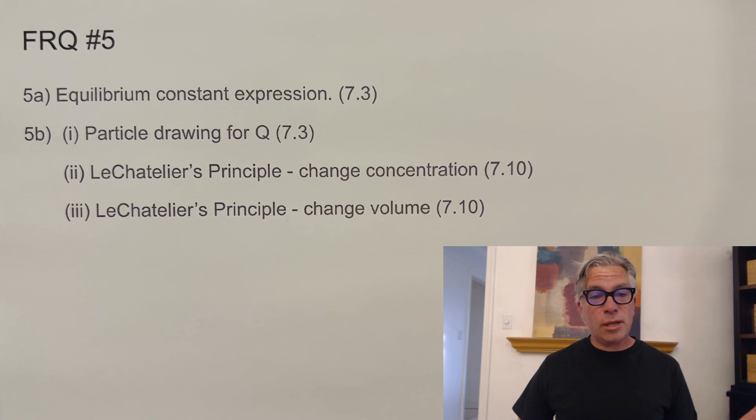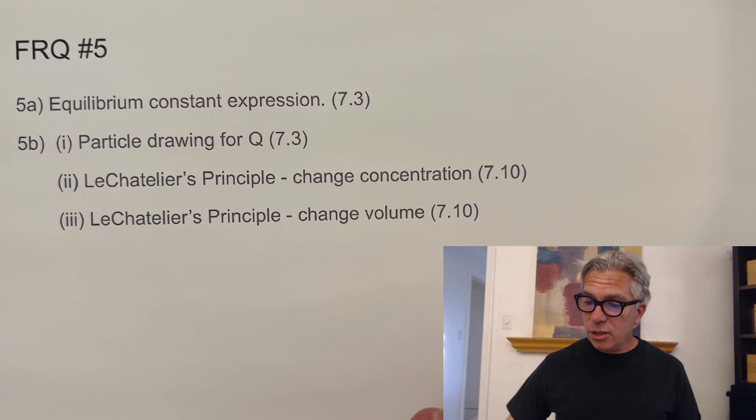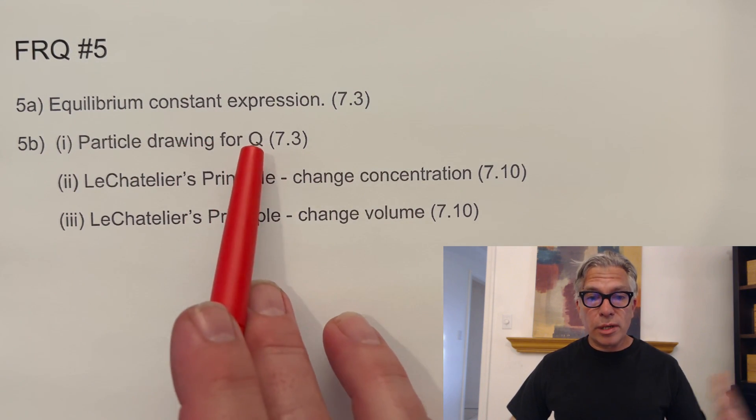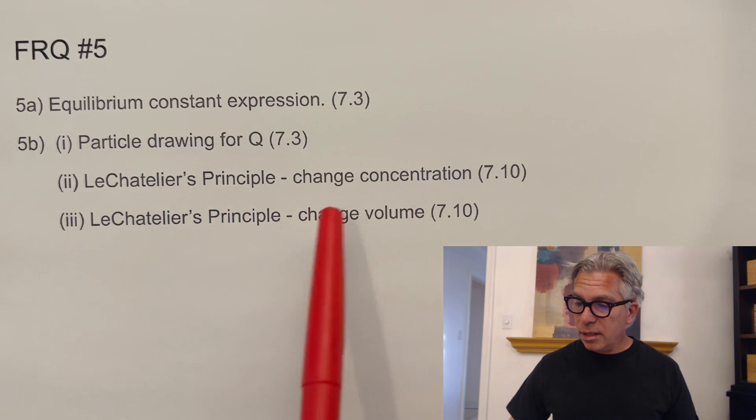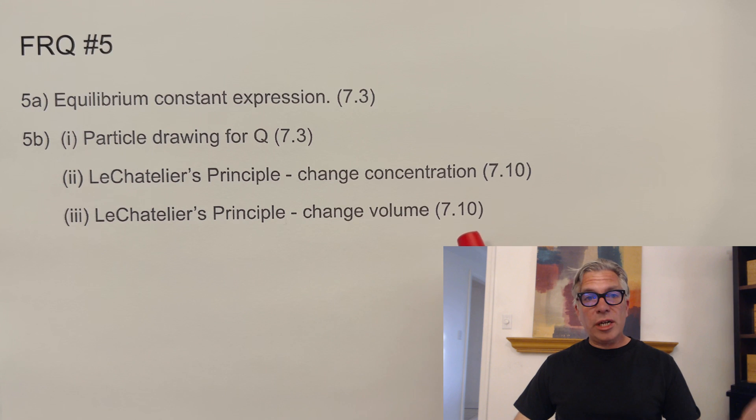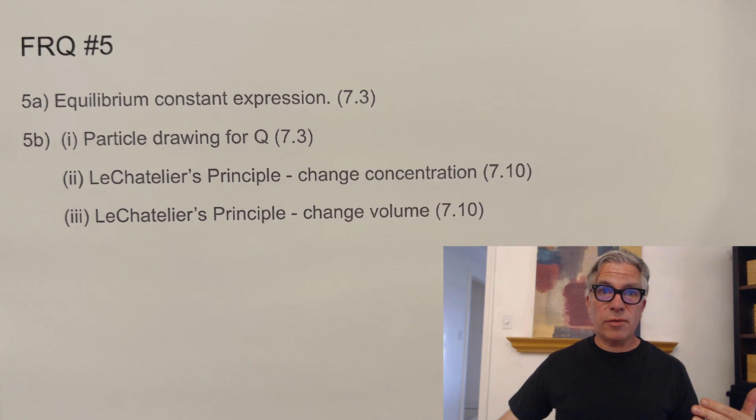FRQ number five was pretty much all equilibrium. We lived in unit seven during that time. And so we have the equilibrium constant expression, a particle drawing for Q showing the ratio of products to reactants, and a couple of Le Chatelier's principle questions dealing with change in volume and change in concentration. So I assigned those parts of unit seven.